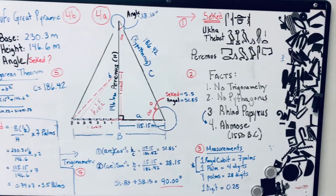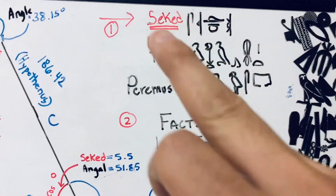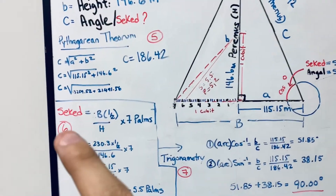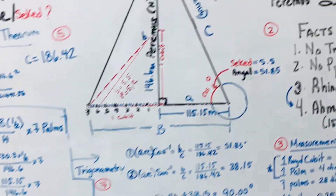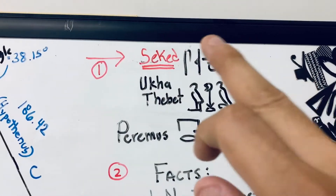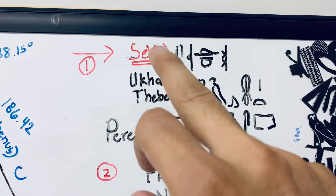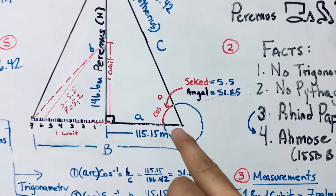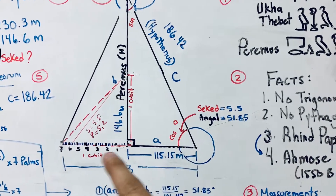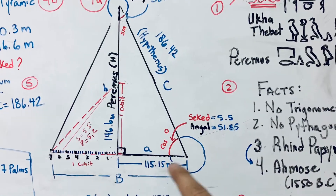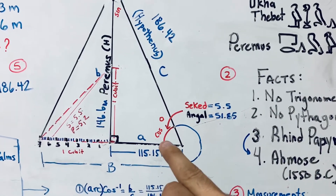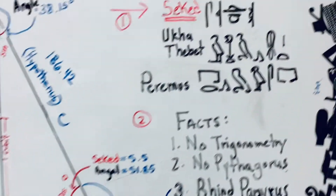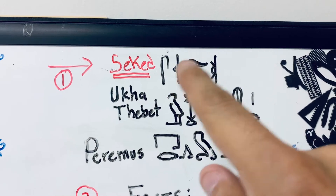Everything is numbered through 1, 2, 3, 4a, 4b, 5, 6, and 7. So let's go to 1. I want you to know a few words. Seket — this is what we're trying to figure out. The word seket is the angle. Over here you can see that if this is a pyramid, what is that angle of elevation for that pyramid? This is what we're going to discuss in the video, and that's how it's written in hieroglyphs. Seket.